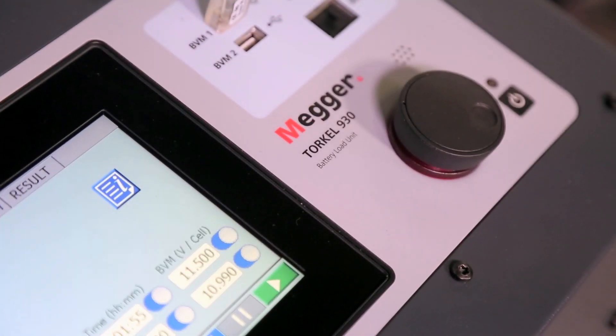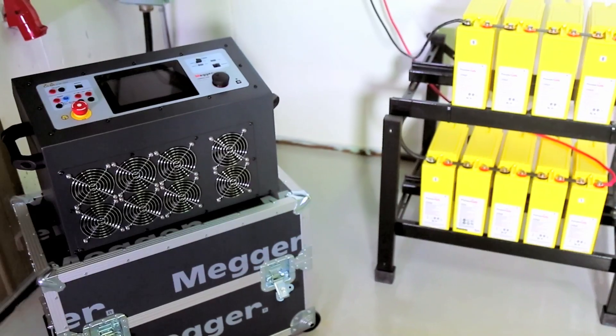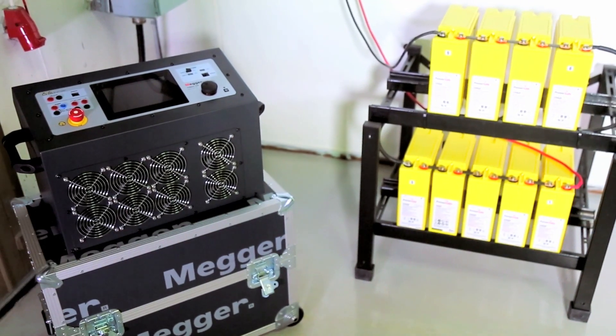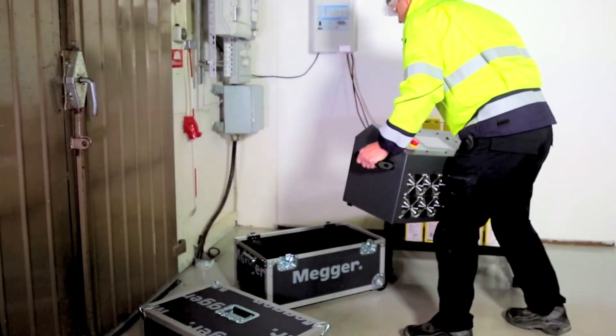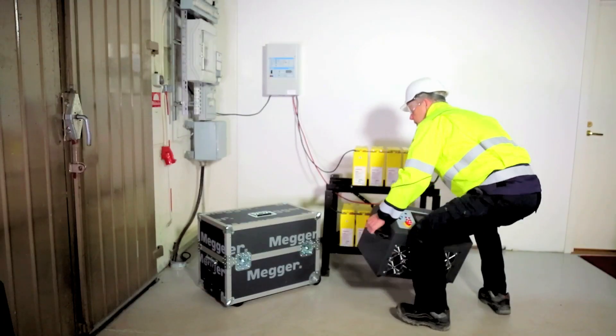Torkel 900 performs load tests or discharge tests to determine battery system's actual capacity. The instrument is lightweight enough to be carried by one person as well as checked in as luggage on flights.